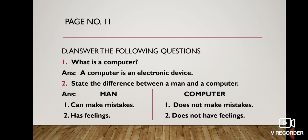Second question is state the difference between a man and a computer. So I put a margin in between. Children, you also have to do in the same way. Put a margin in between and one side you have to write man and on the other side you have to write computer. Then on man side you can write first point: can make mistakes. And on computer side first point: does not make mistake. On man side: has feelings. On computer side: does not have feelings.